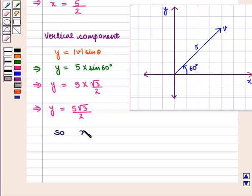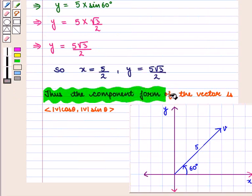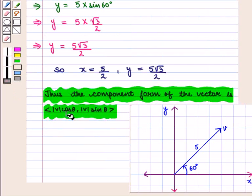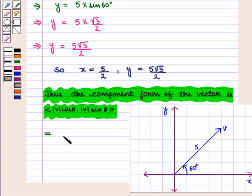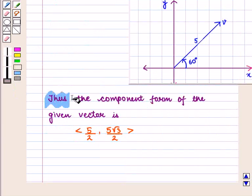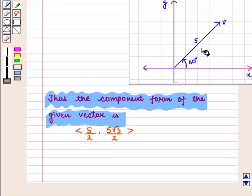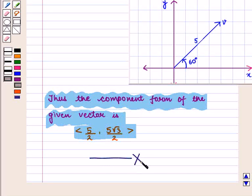So we get x = 5/2 and y = 5√3/2. Thus, the component form of the vector is the ordered pair (|v|·cos(theta), |v|·sin(theta)) = (5/2, 5√3/2). This completes our session. Hope you enjoyed this session.